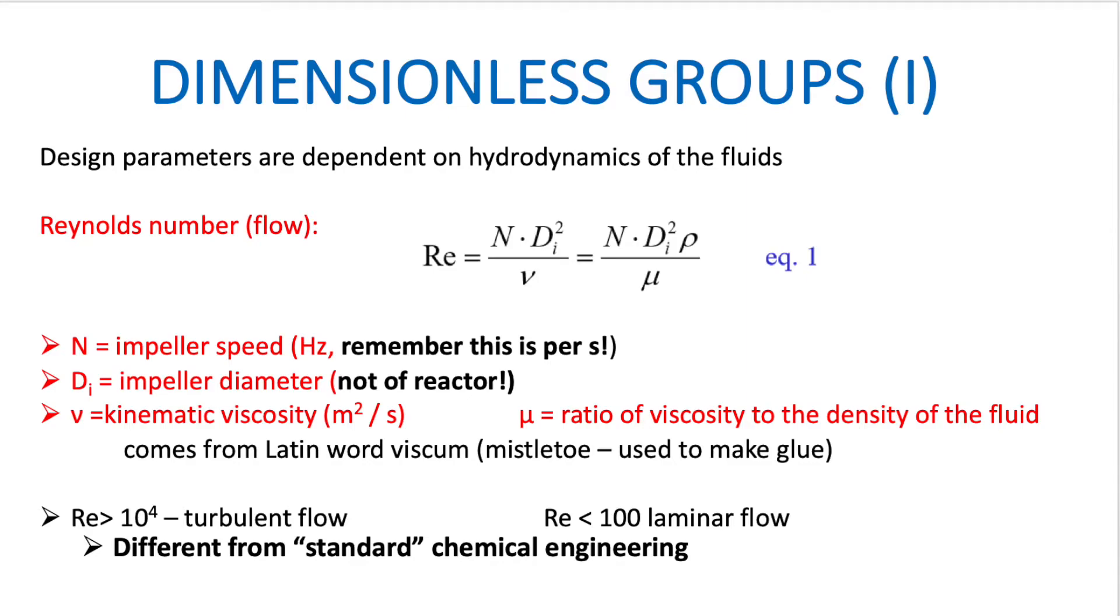Now looking at the formula, there's mainly three things that can go wrong. So the impeller speed is in hertz, so it's in seconds, whereas we'll see this is normally provided in rpm, so you will need to convert that first. Then we need to make sure that we take the diameter of the impeller, so not of the tank.